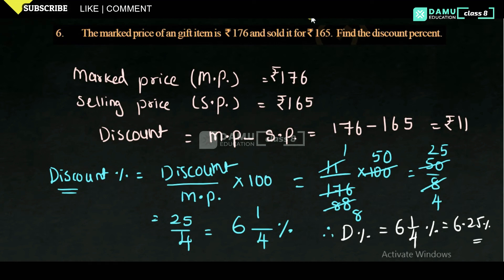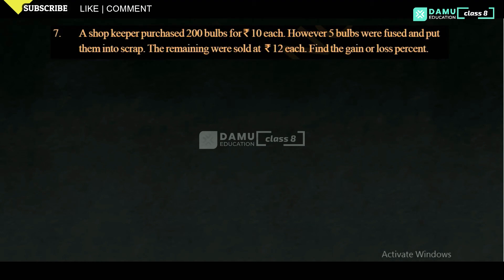Thanks for watching. Please subscribe. In this module we are going to discuss the seventh question: a shopkeeper purchased 200 bulbs for 10 rupees each. However, 5 bulbs were fused and put into scrap. The remaining bulbs were sold at 12 rupees each. Find the gain or loss.